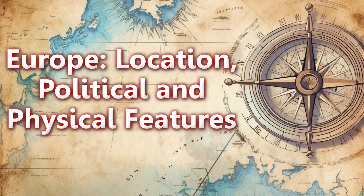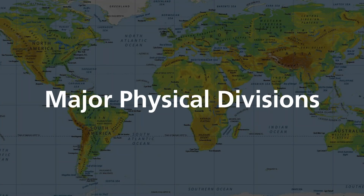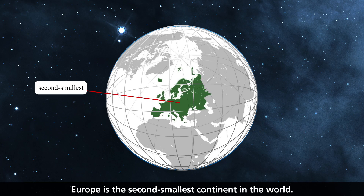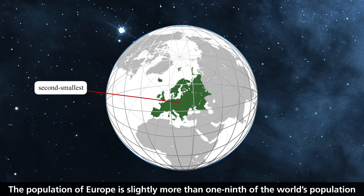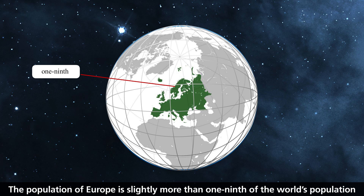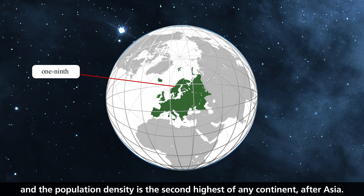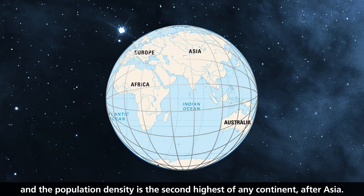Europe: location, political and physical features. Europe is the second smallest continent in the world. The population of Europe is slightly more than one-ninth of the world's population, and the population density is the second highest of any continent after Asia.